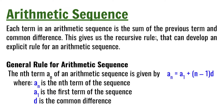The nth term of an arithmetic sequence is given by the formula: a sub n is equal to a sub 1 plus n minus 1 times d, where a sub n is the nth term of the sequence, a sub 1 is the first term of the sequence, and d is the common difference.